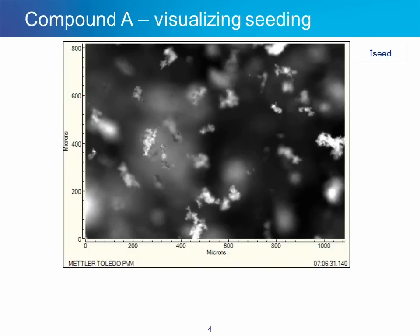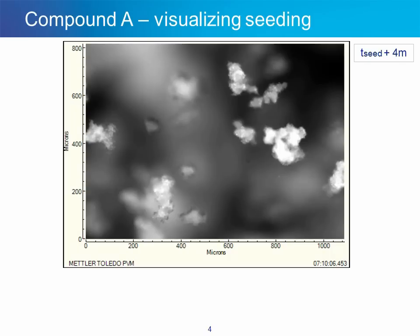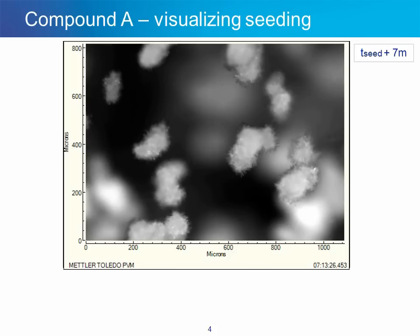This is how seeds actually exist in the process itself, rather than what they might look like after sampling and preparation for visualization under an offline microscope. We can see the seeds are added to the crystallizer and they form these loosely bound flocs. Over time, these loosely bound flocs appear to form more densely formed aggregates or agglomerates. After seven minutes, we really begin to see the direction this crystallization process is going to take — seed crystals have agglomerated, and what we're seeing appears to be surface nucleation with small needle-shaped crystals growing out from the center of these seed aggregates.